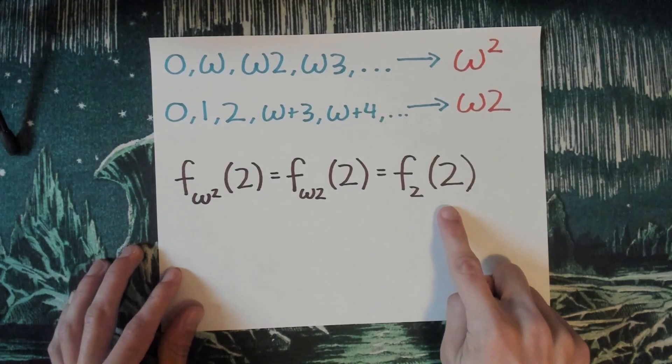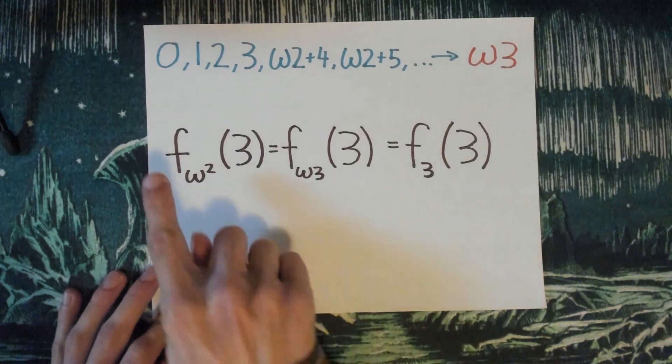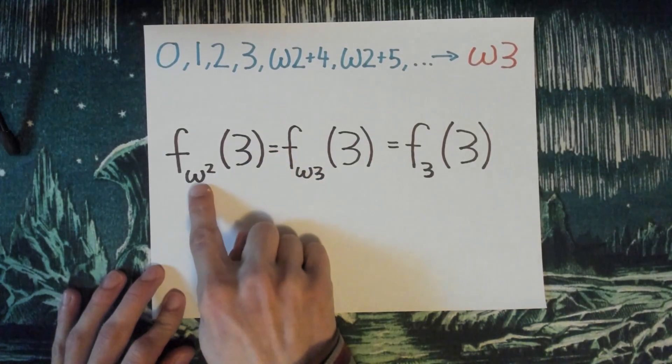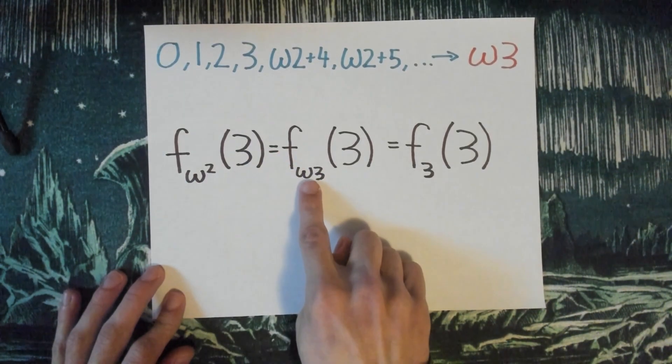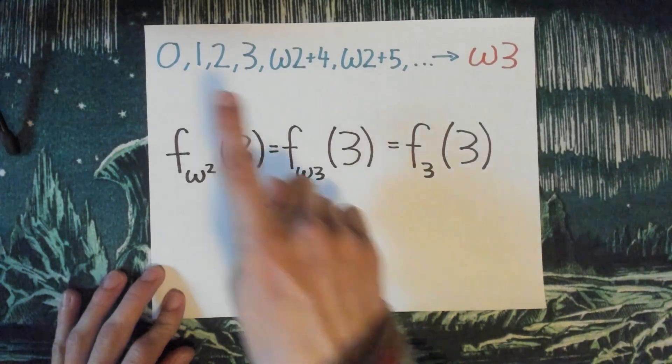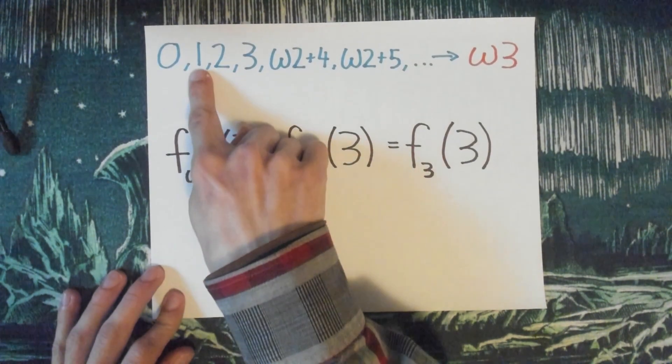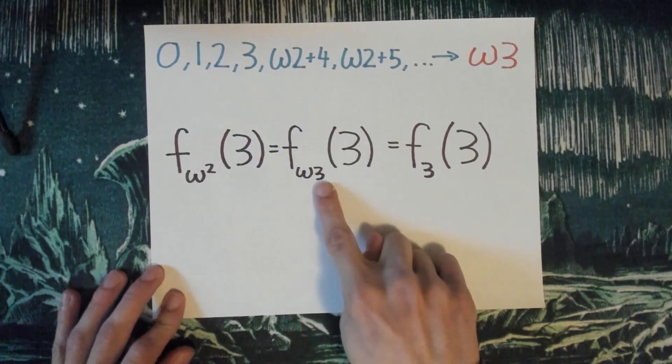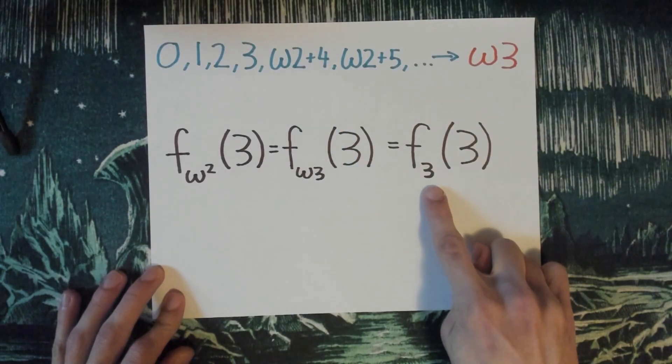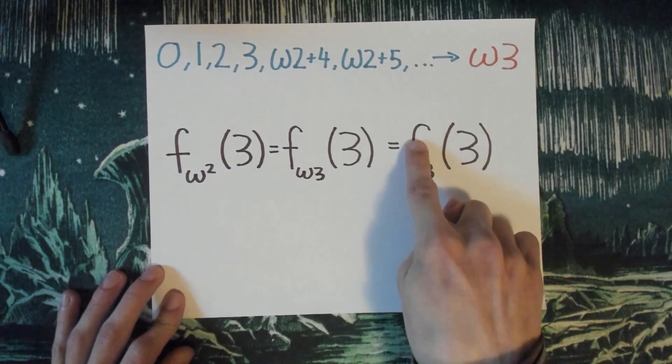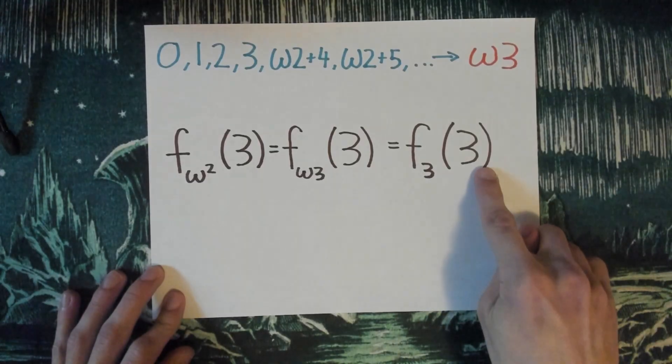Let's try some other inputs. How about f omega squared of 3? Well, we plug in the 3 into the omega squared, giving us omega times 3. Now we plug in 3 to that. So let's see, omega 3 of 0, omega 3 of 1, omega 3 of 2, omega 3 of 3. Okay, that's 3. So omega times 3 gets replaced with a 3, and we see that f omega squared of 3 is equal to f3 of 3.